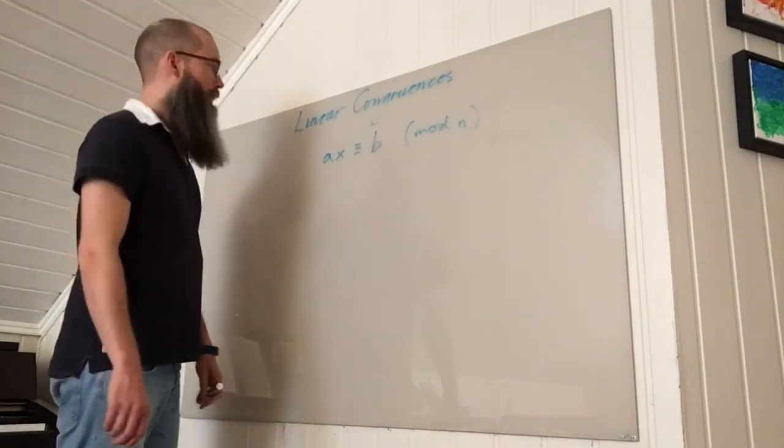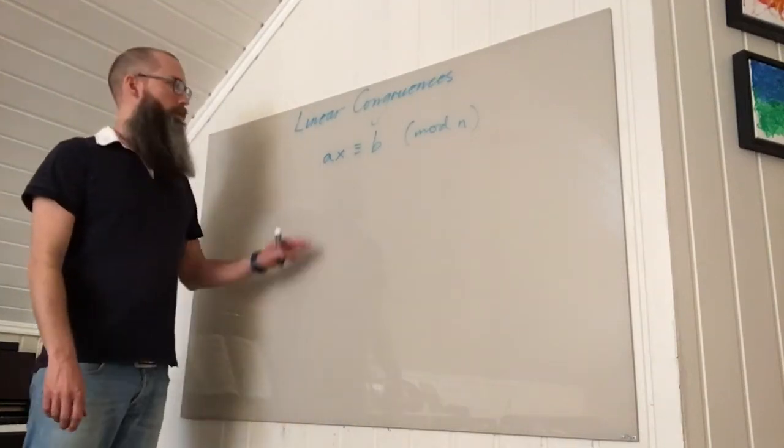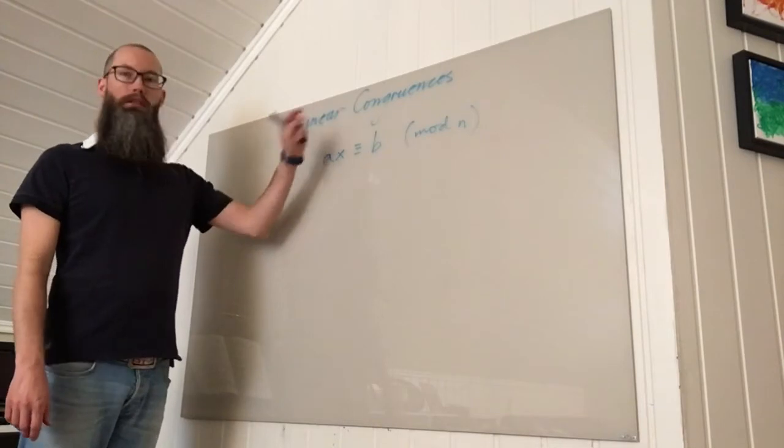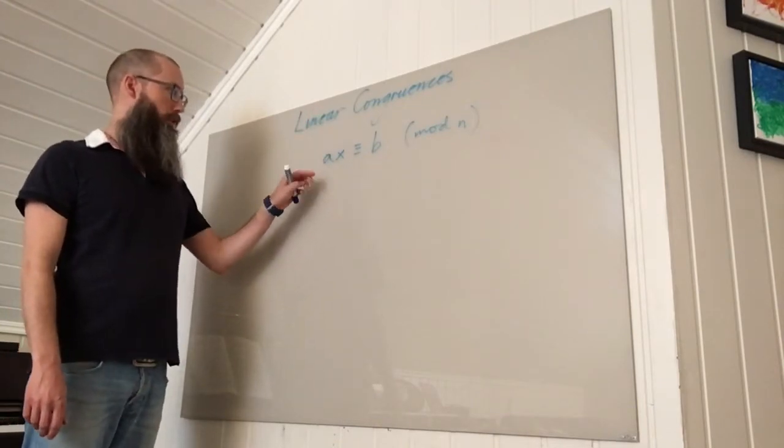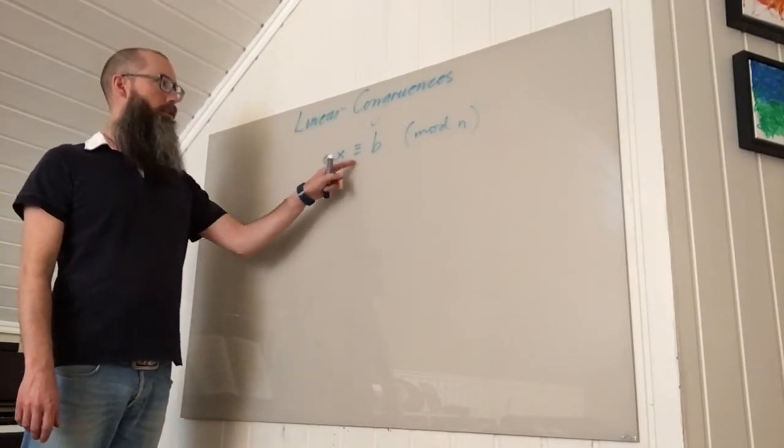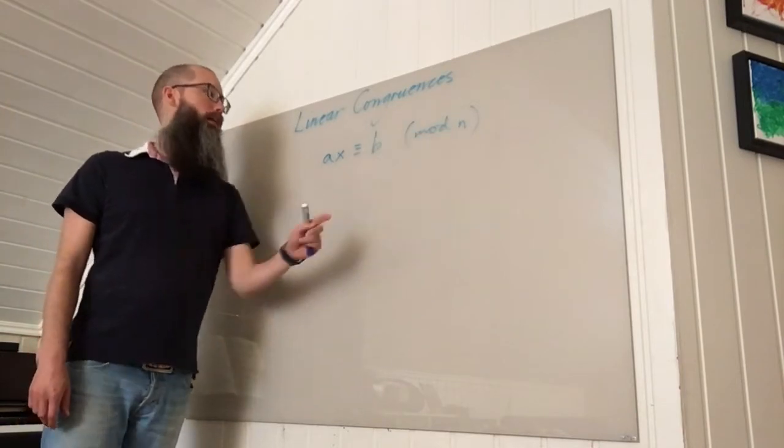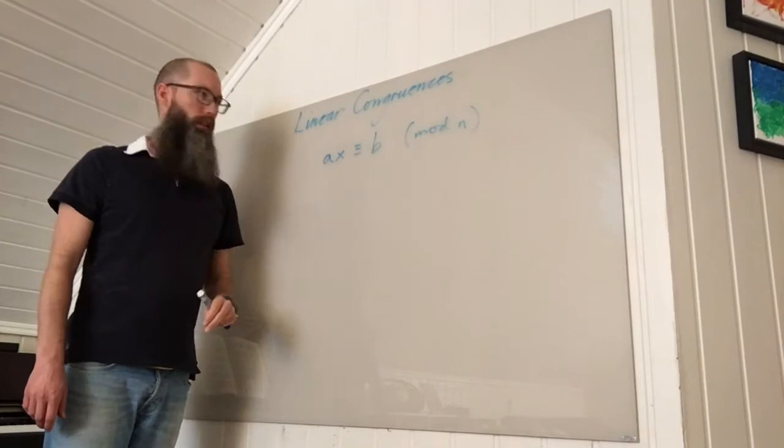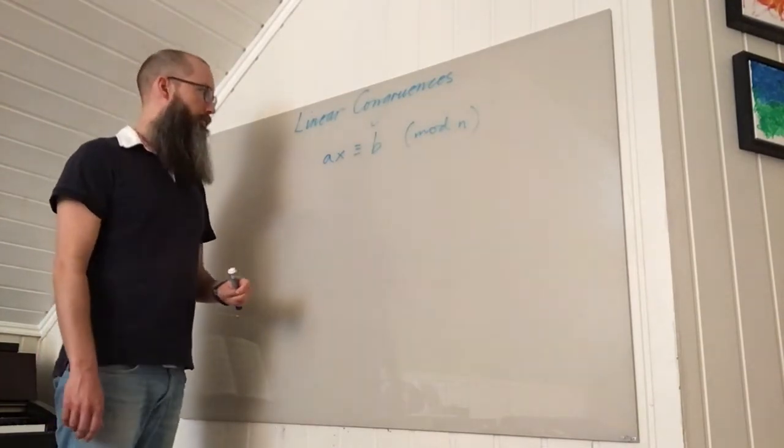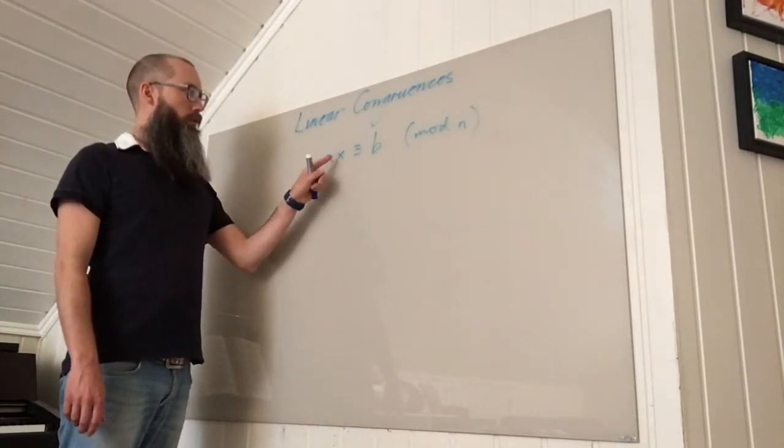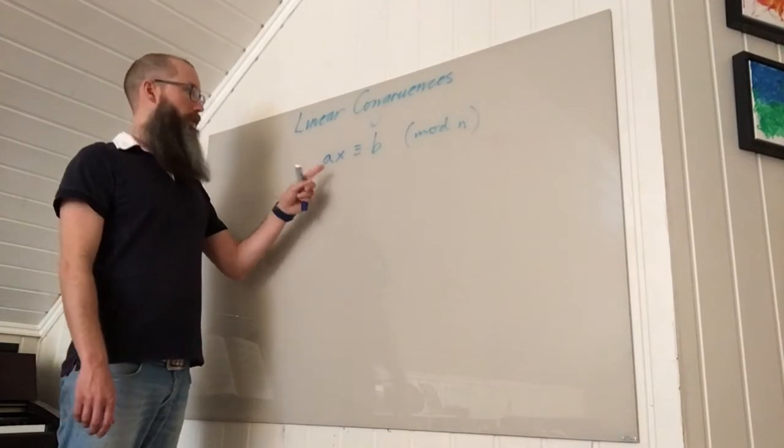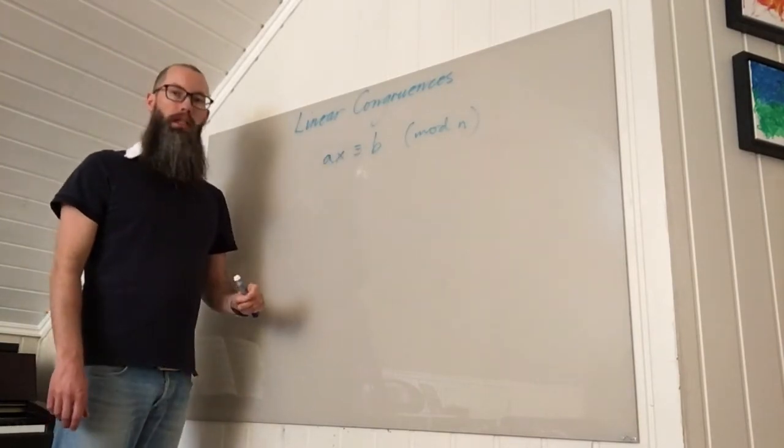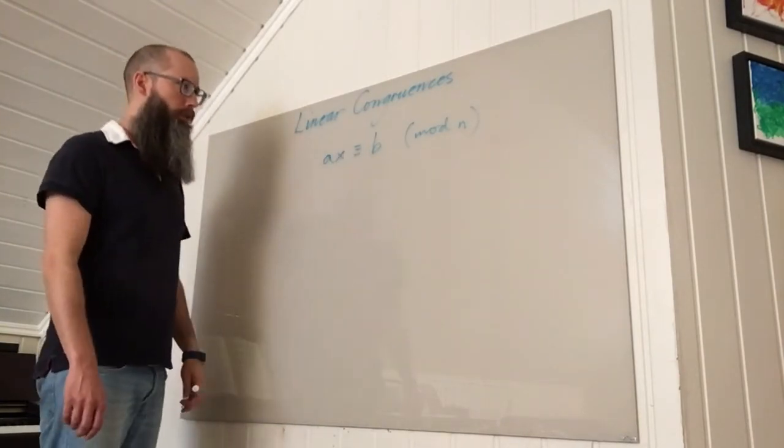Hi, in this video we're going to solve linear congruences—equations of the type ax is congruent to b modulo m, where a and b are given integers, the modulus n is also an integer and given, and we want all the integers x so that ax is congruent to b mod n.